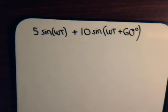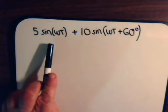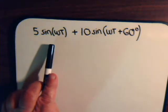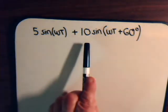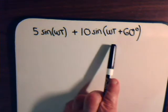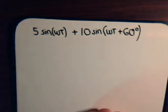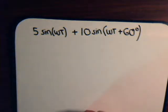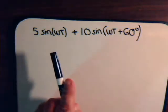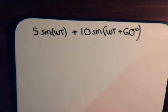Let's consider another phasor problem. Here we have a current: five times the sine of omega t, an alternating current, and a different alternating current source of ten times the sine of omega t plus sixty degrees. In the last video we talked in more detail about the meaning of the phase angle, but what we want to do — what we did in the last video — is add these two current sources together.